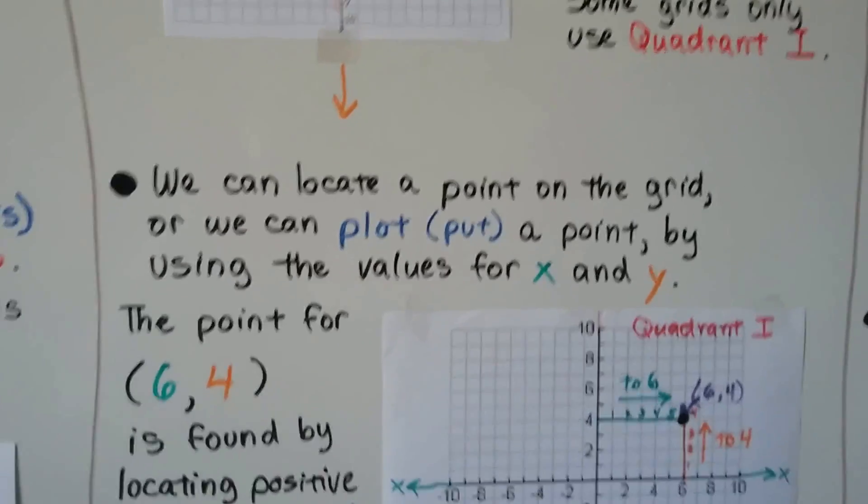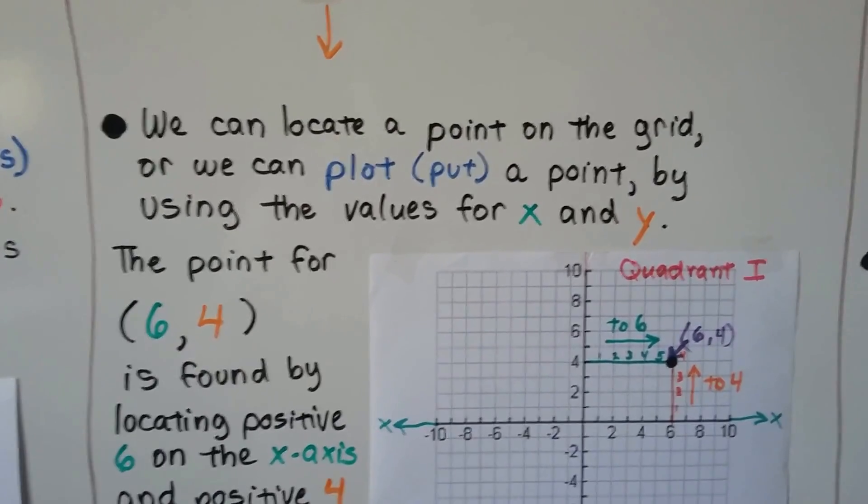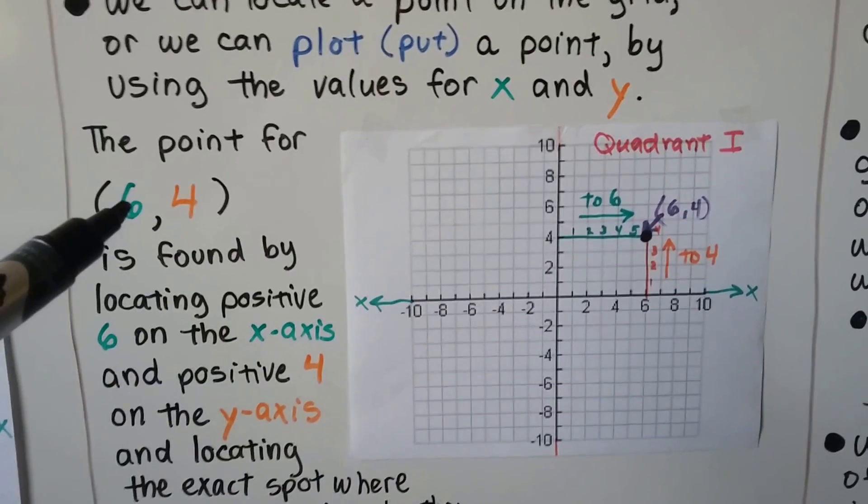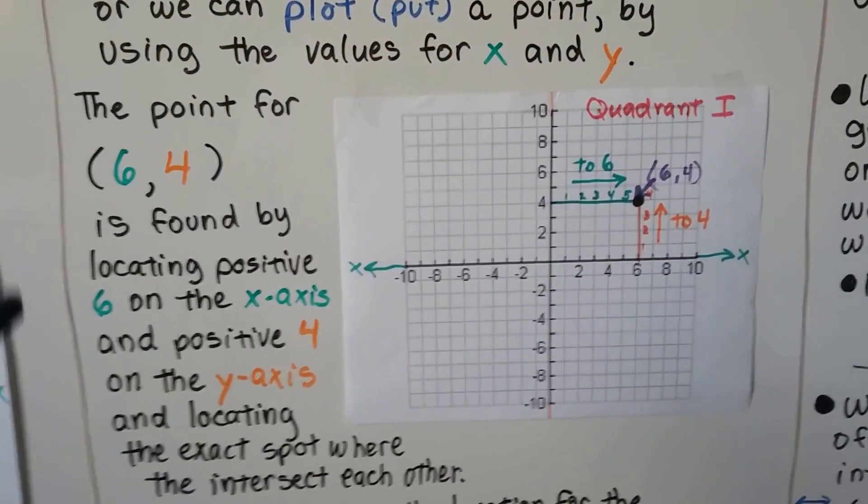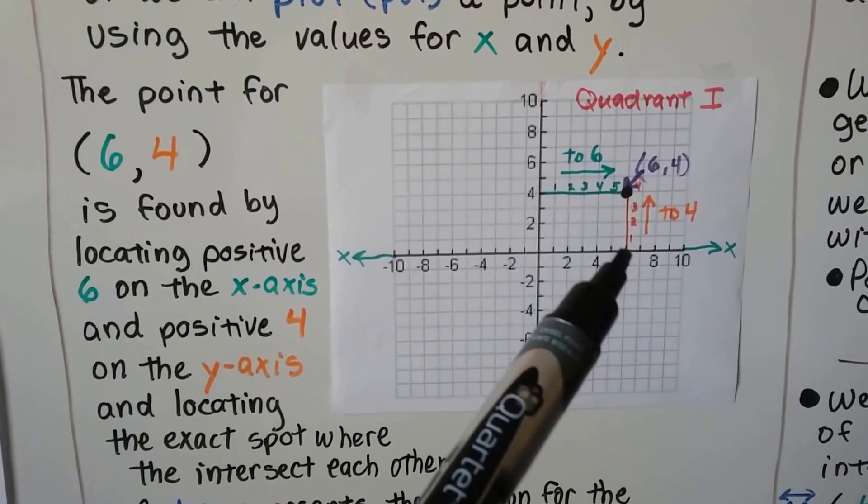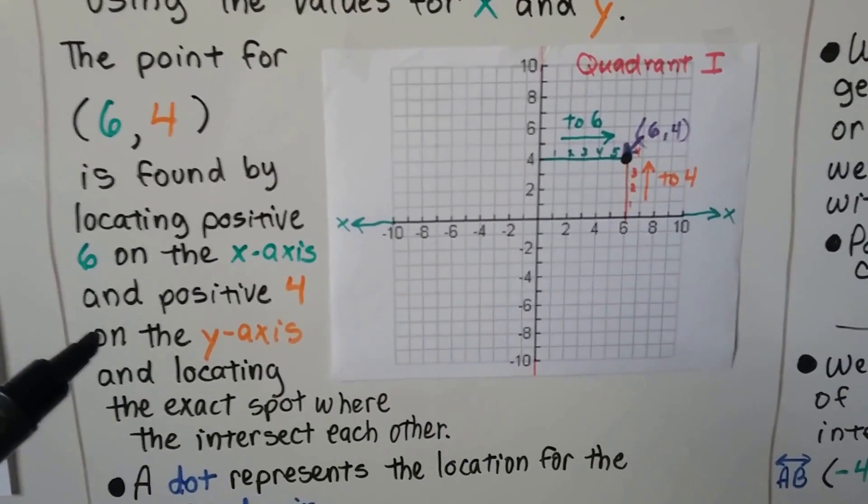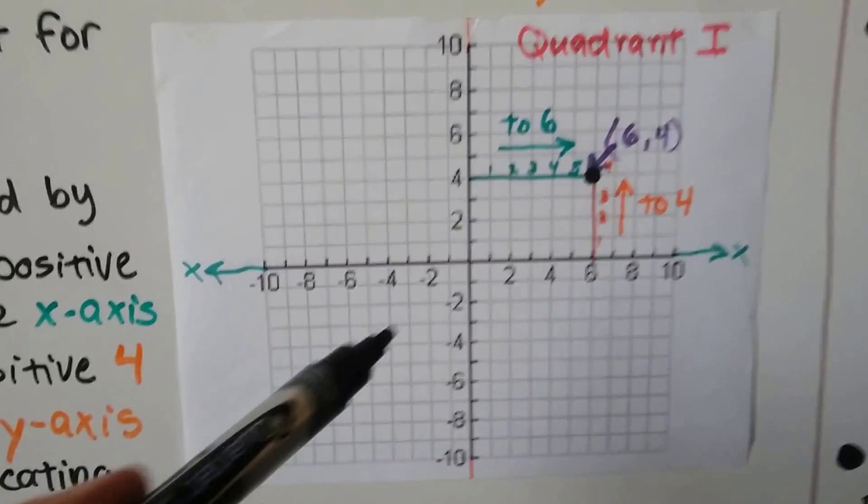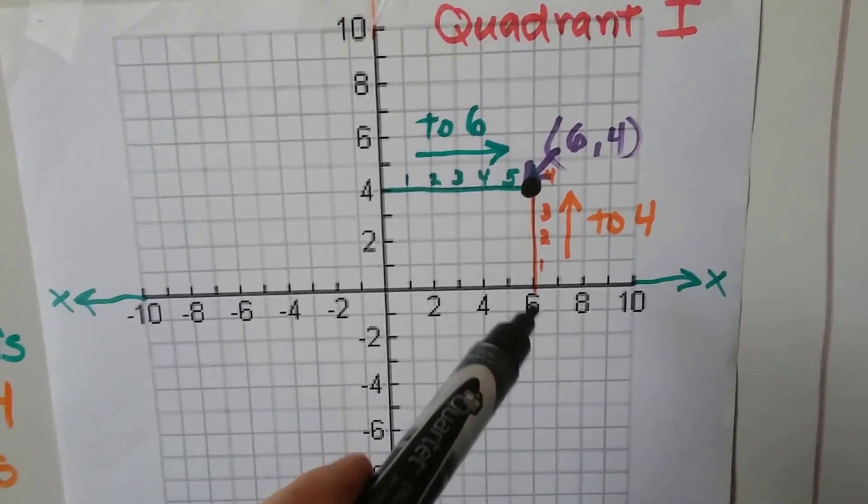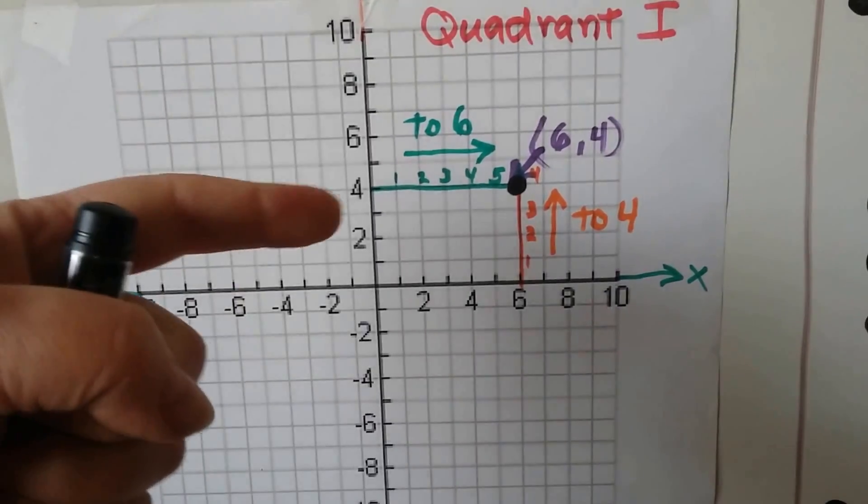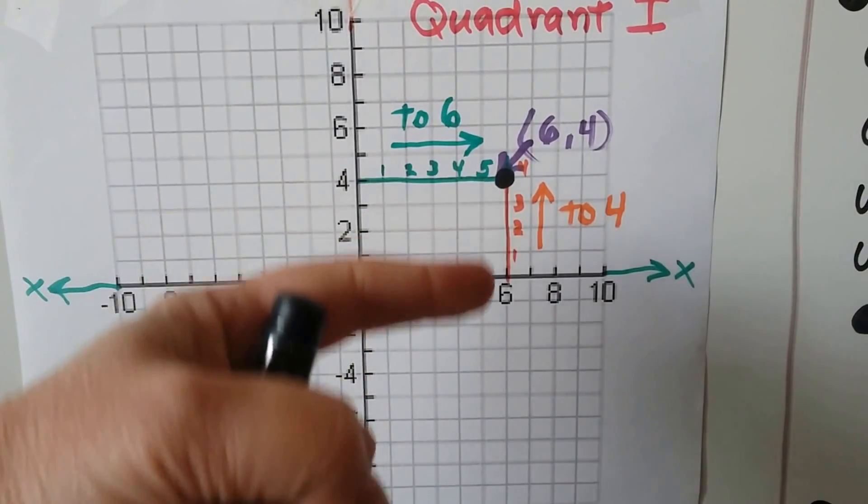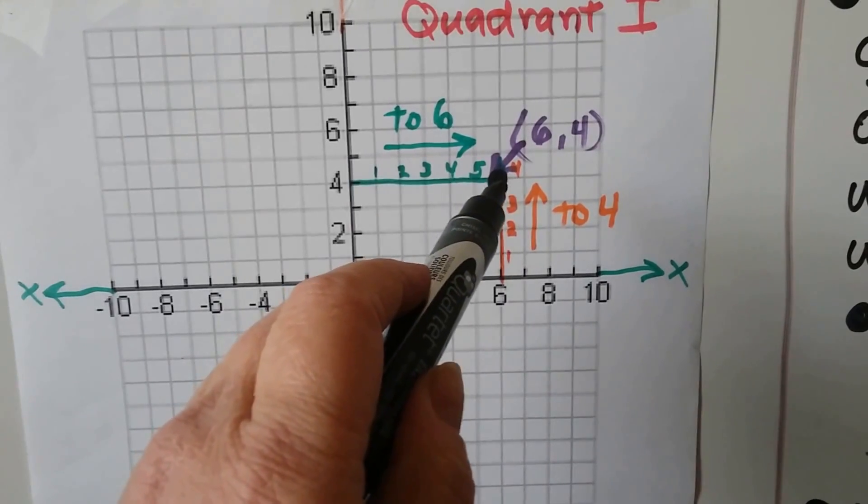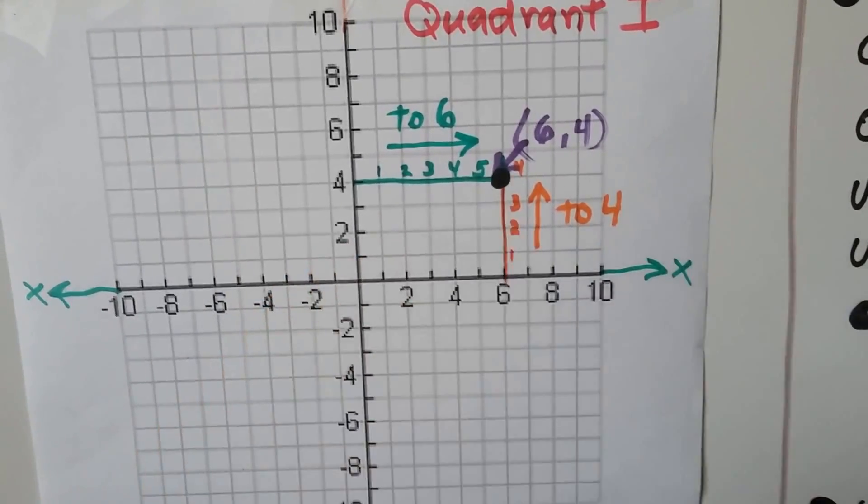We can locate a point on the grid or plot, which means put, a point by using the values for x and y. So if we have the point 6 for x and 4 for y, we find it by locating positive 6 on the x-axis, it's right there, and positive 4 on the y-axis. We find the exact spot where they intersect each other. We go across to find the x, we go up to find the y, and we can see they meet right there. So that's the point, 6 for x, 4 for y.